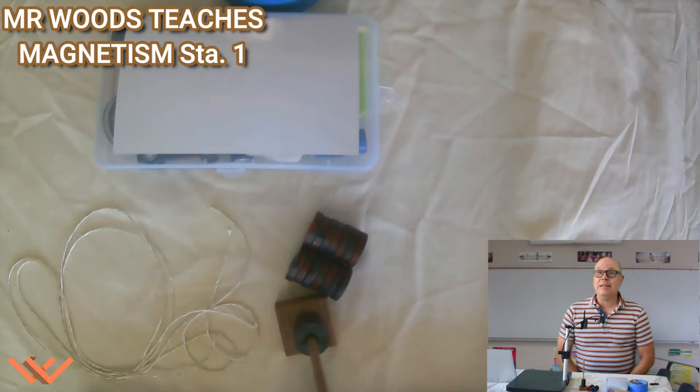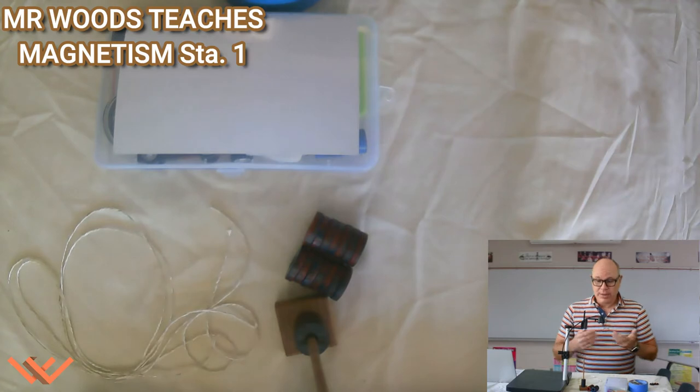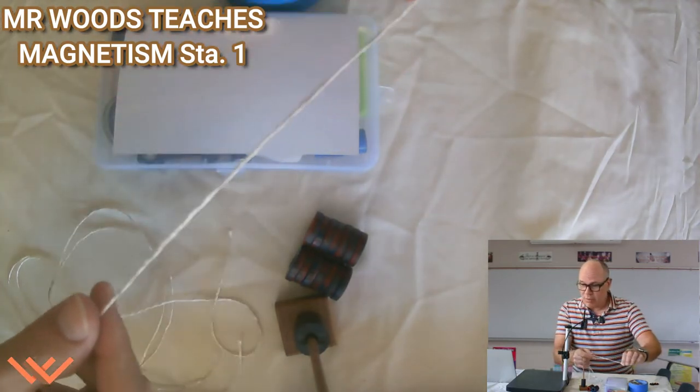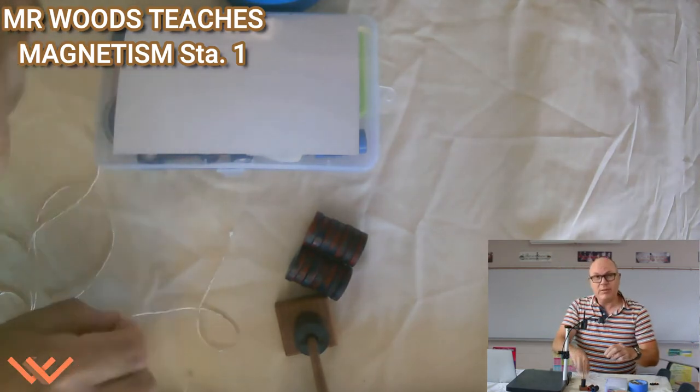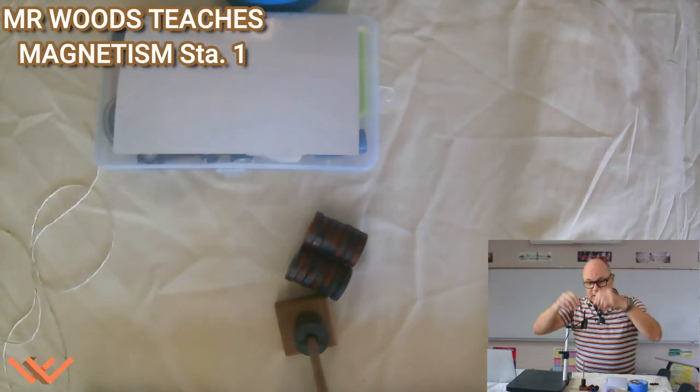Today is Magnetism Station One. First, let's take a look at the materials that we're going to need. We're going to need about a one meter length of string. I've got a couple of them here because we're going to probably try a couple of things.